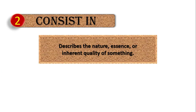Now let's look at 'consist in.' Consist in refers to quality — the essence, nature, or characteristics of something. We use 'consist in' when we are not talking about physical elements or ingredients, but rather intangible qualities. When the thing you are describing is intangible, you use 'consist in.'